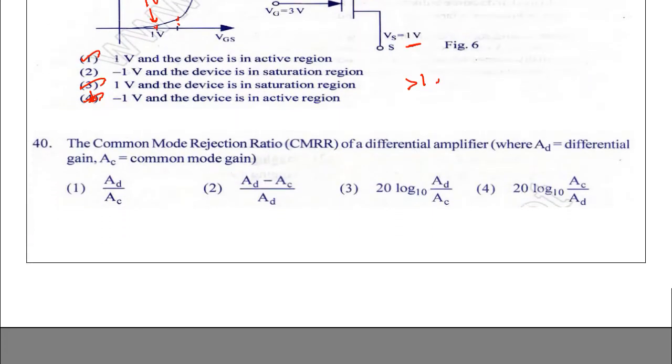The Common Mode Rejection Ratio (CMRR) of a differential amplifier where A_d is differential gain and A_c is common mode gain. CMRR is equal to 10 log base 10 of A_d by A_c, because these are powers. If these were voltages, we would take 20 log.